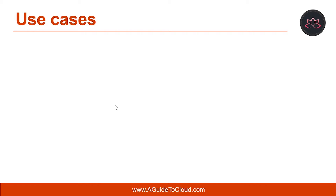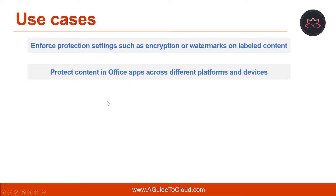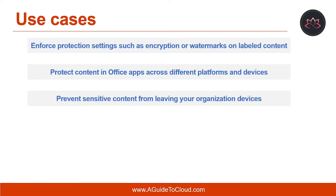Let's discuss some of the use case scenarios of sensitivity labels. First, you can use sensitivity labels to enforce protection settings such as encryption or watermarks on labeled content. For example, your users can apply a confidential label to a document or email, and that label can encrypt the content and apply a confidential watermark. Second, you can protect content in Office apps across different platforms and devices. Another scenario is to prevent sensitive content from leaving your organization on devices running Windows by using endpoint protection in Microsoft Intune. After a sensitivity label has been applied to content on a Windows device, endpoint protection can prevent that content from being copied to a third-party app such as Twitter or Gmail, or being copied to removable storage such as a USB drive.